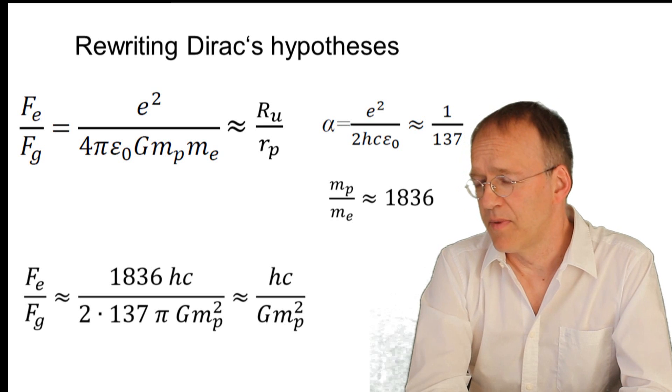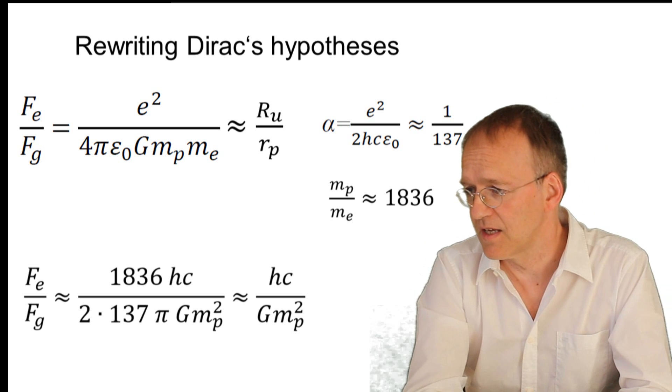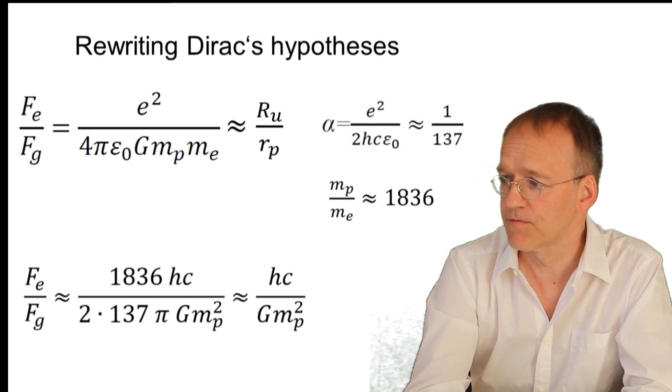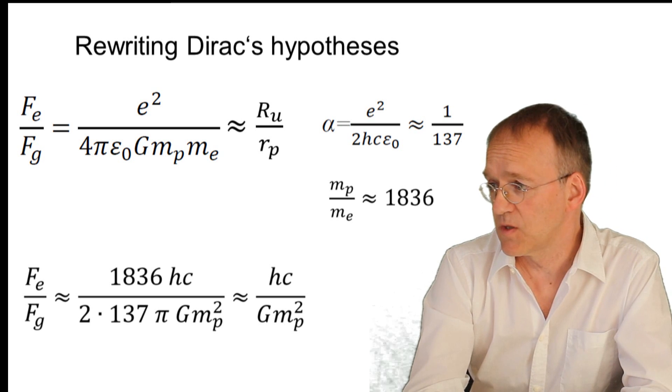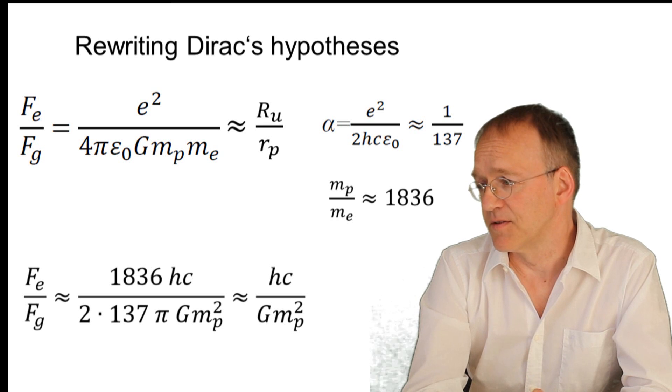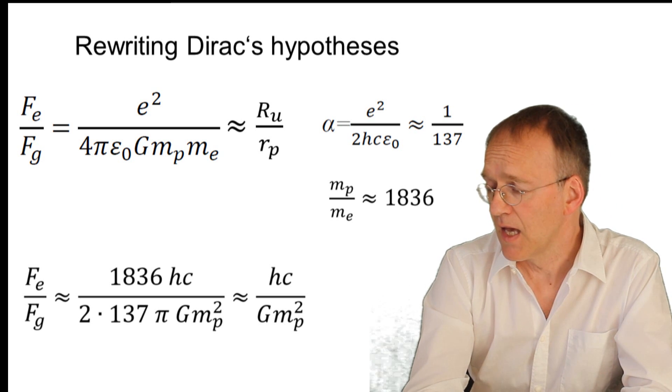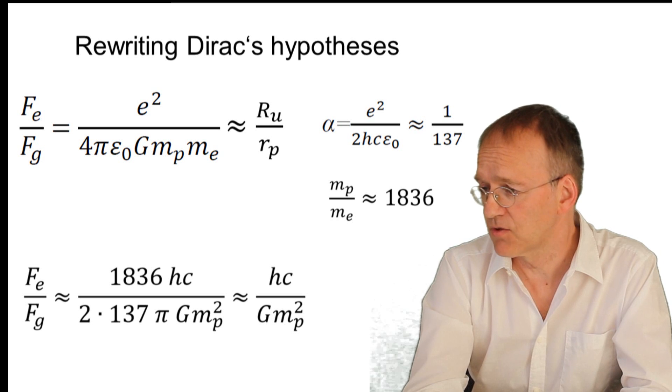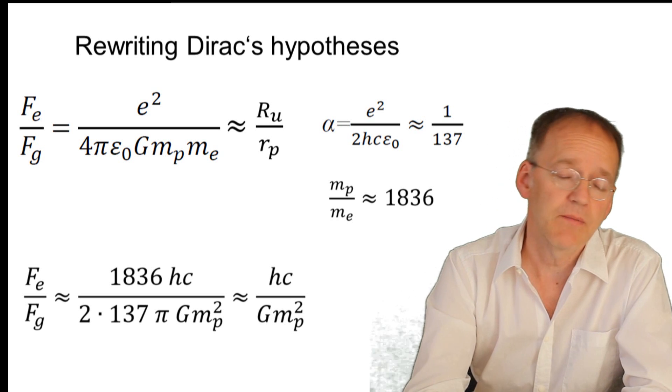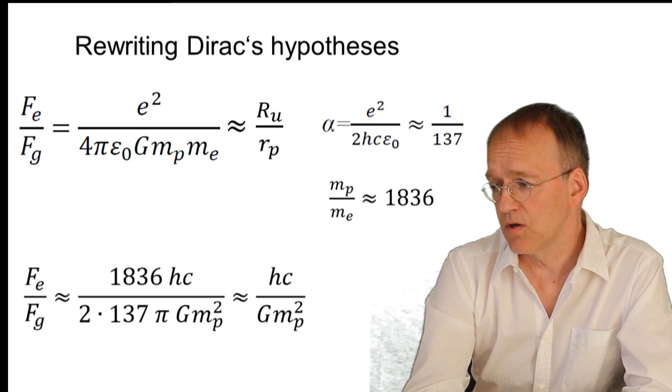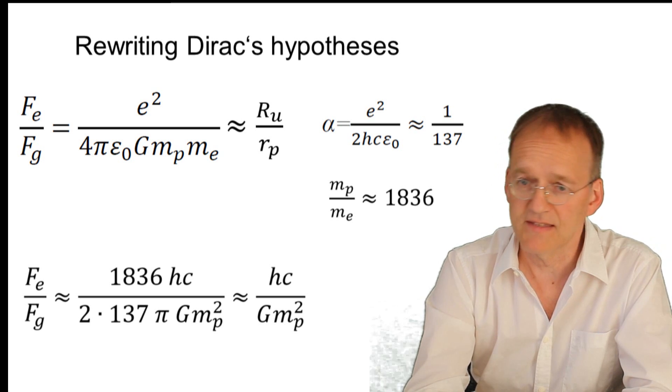So we start by just writing down the numbers—the electric force and the r squared cancels, and so we have the ratio of the electric and the gravitational force here. And well, we may put in the fine structure constant, which is e squared divided by 2ħc epsilon zero, which is approximately the inverse number 137. And of course you have the mass ratio of proton and electron. So we may just rewrite this number, and if we talk about orders of magnitude, this ratio more or less equals ħc divided by G (the gravitational constant) and the mass of the proton squared.